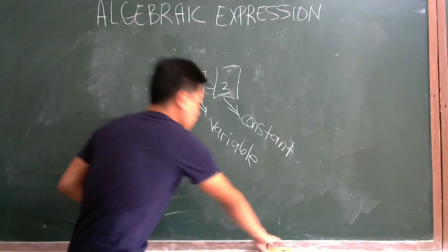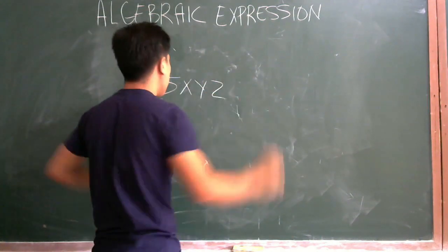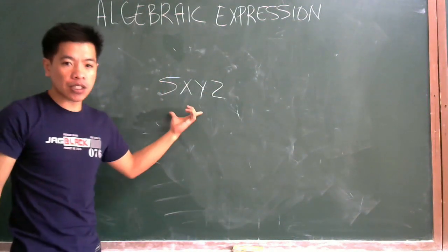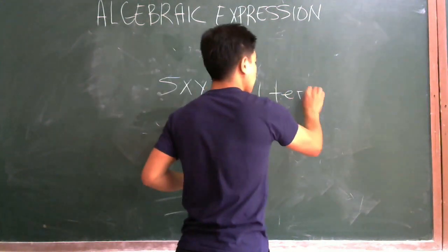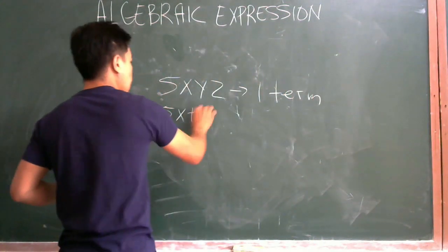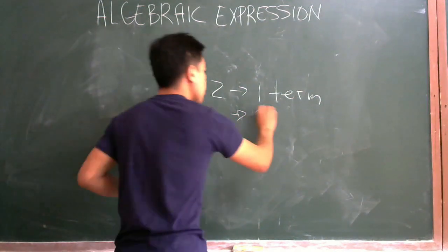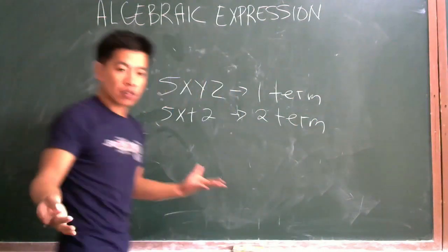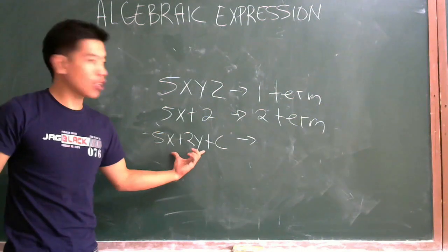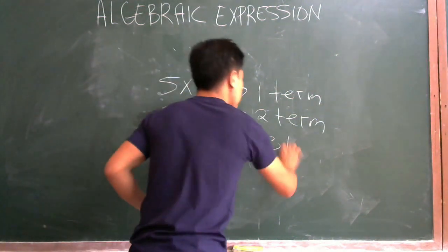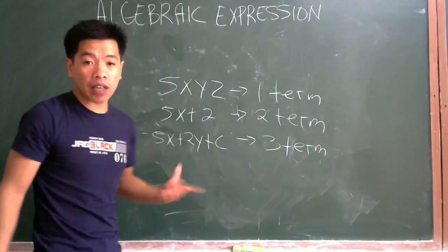For example, if we have 5XYZ, how many terms is this? This is only having one term. How about if we have 5X plus 2? We have the first term and the second term, separated by addition, so it is two terms. If we have 5X plus 2Y plus C, it is one, two, three — so it is three terms. Basically, terms are separated only by addition and subtraction.